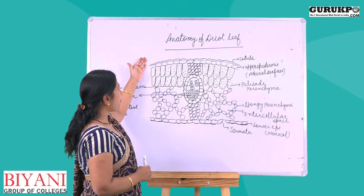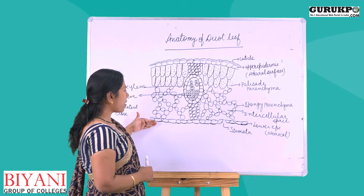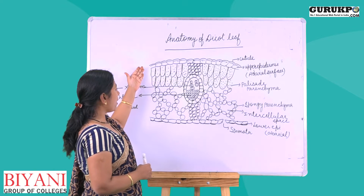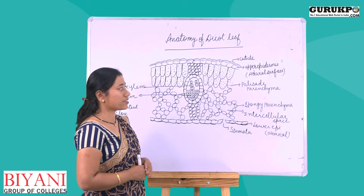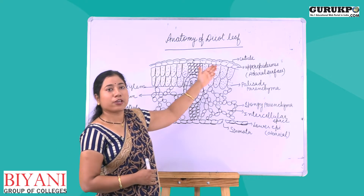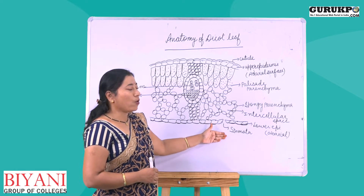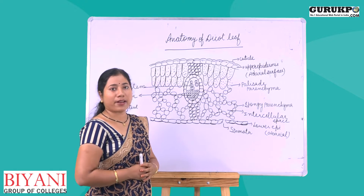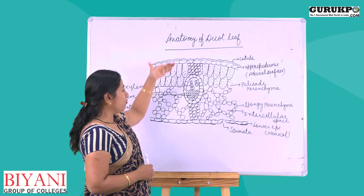The upper epidermis is also known as adaxial epidermis, and the lower epidermis is known as abaxial epidermis. There are some differences between them: the upper epidermis is covered by a thick cuticle, and the lower epidermis bears more stomata than the upper epidermis.